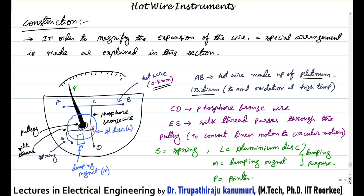From the center of this phosphor bronze wire at point E, we connect one silk thread. This silk thread is connected through a pulley, which is connected directly to the pointer — when the pulley rotates, the pointer will deflect. The silk thread passes through the pulley and is connected to a spring S, which always tries to pull the silk thread from point E.